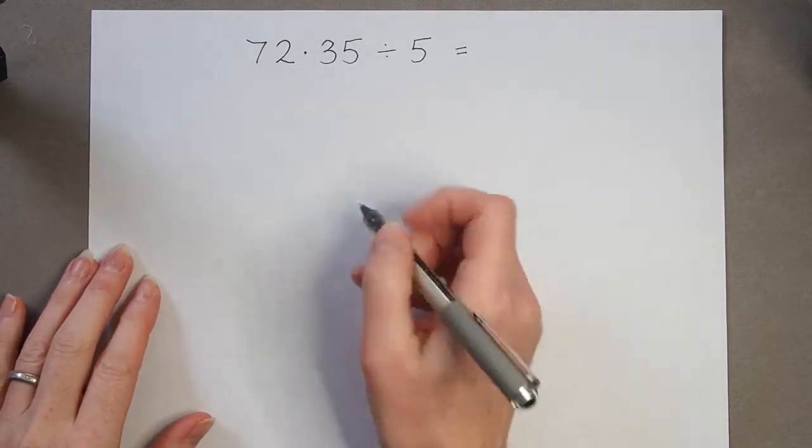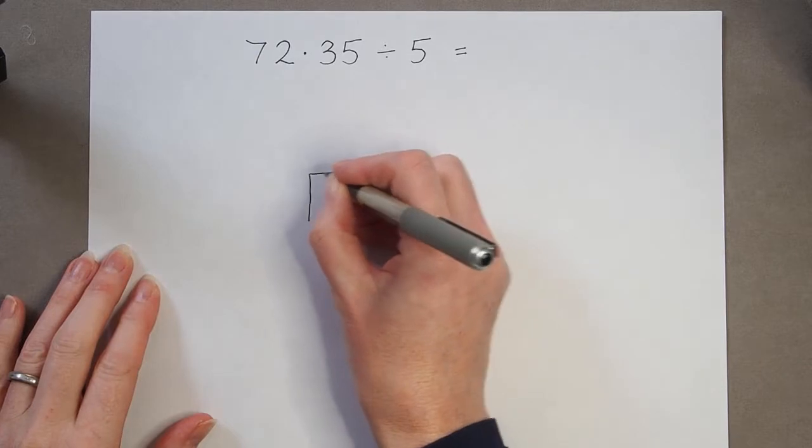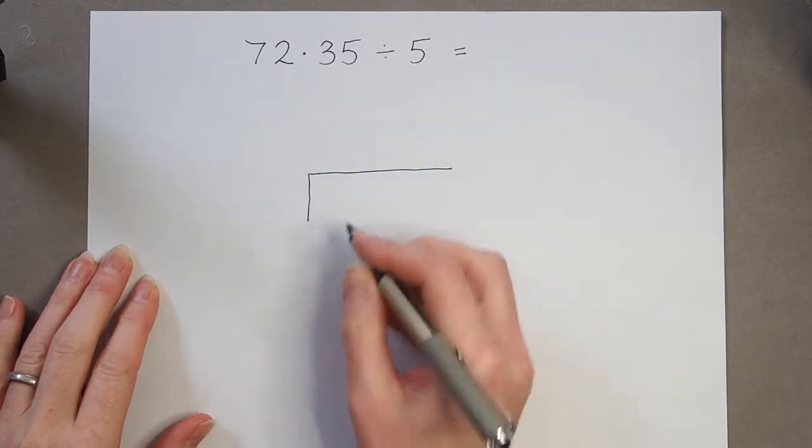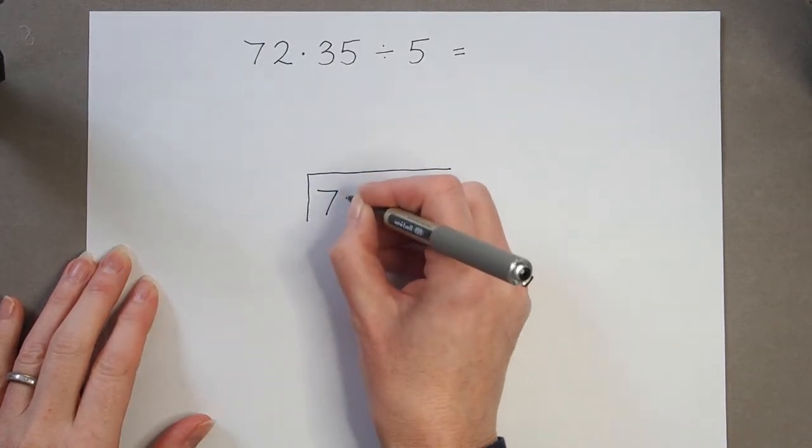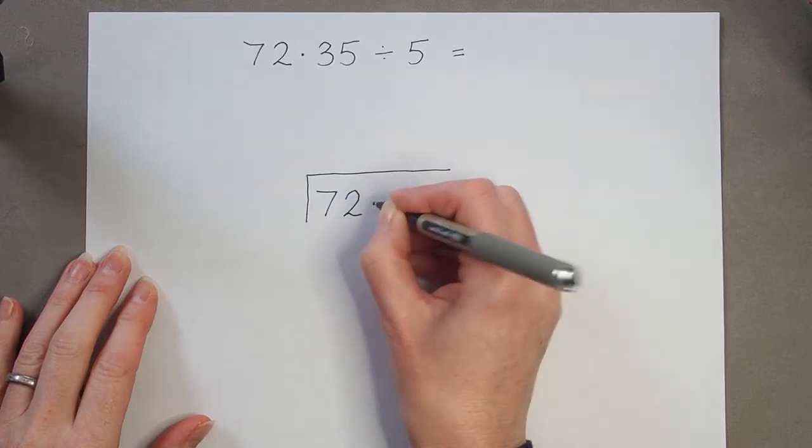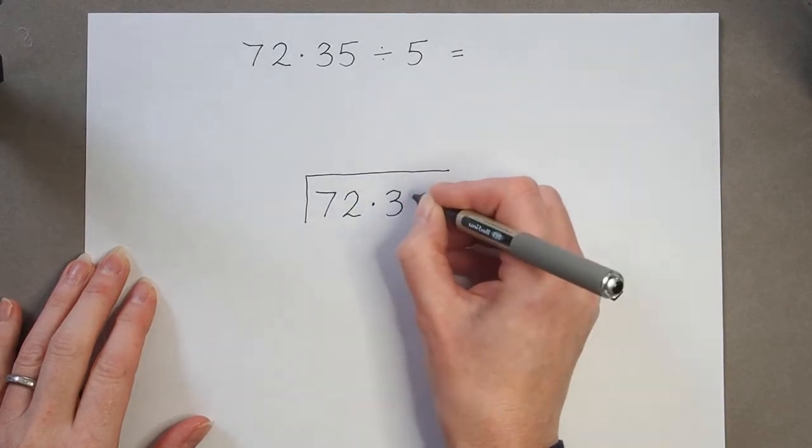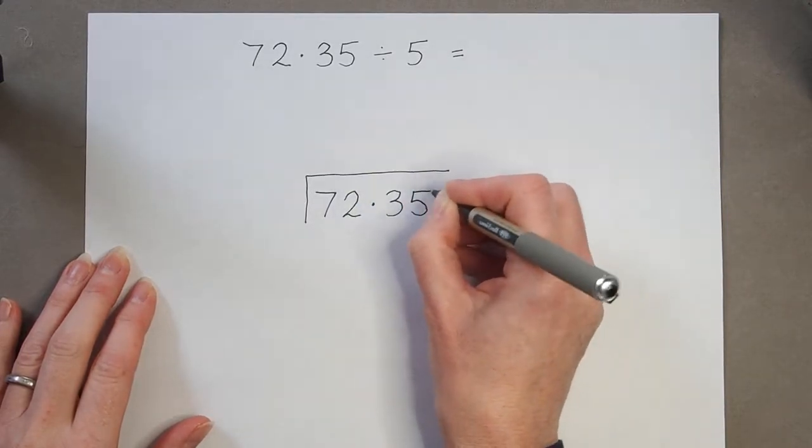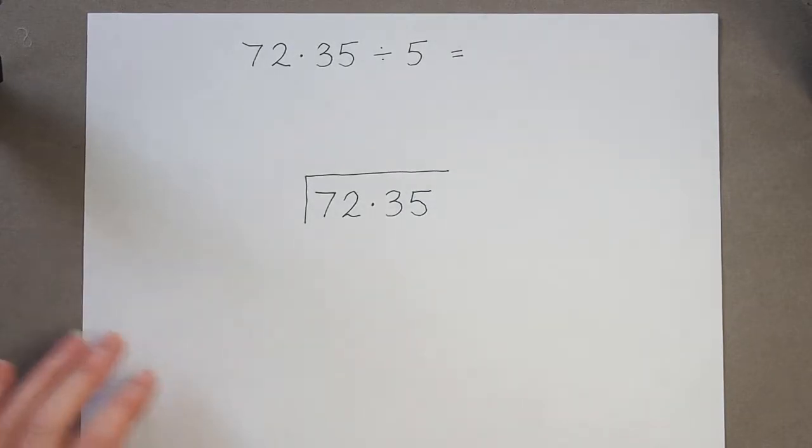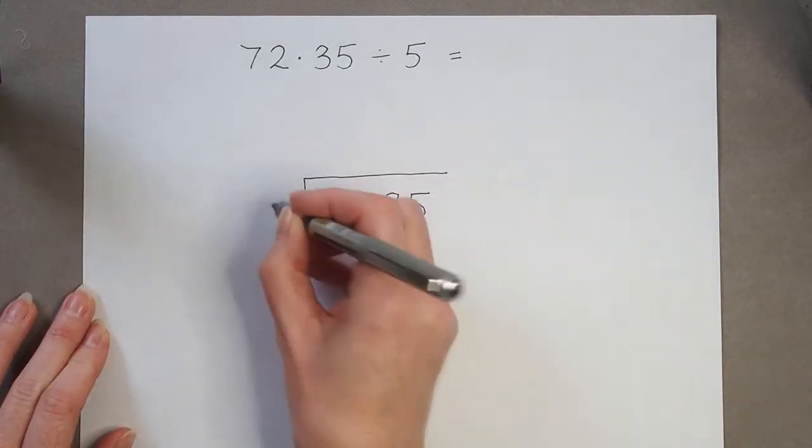So we're going to take our first number and we're going to put it inside the box, 72.35, keeping that decimal point in the same place. And we're dividing by five.